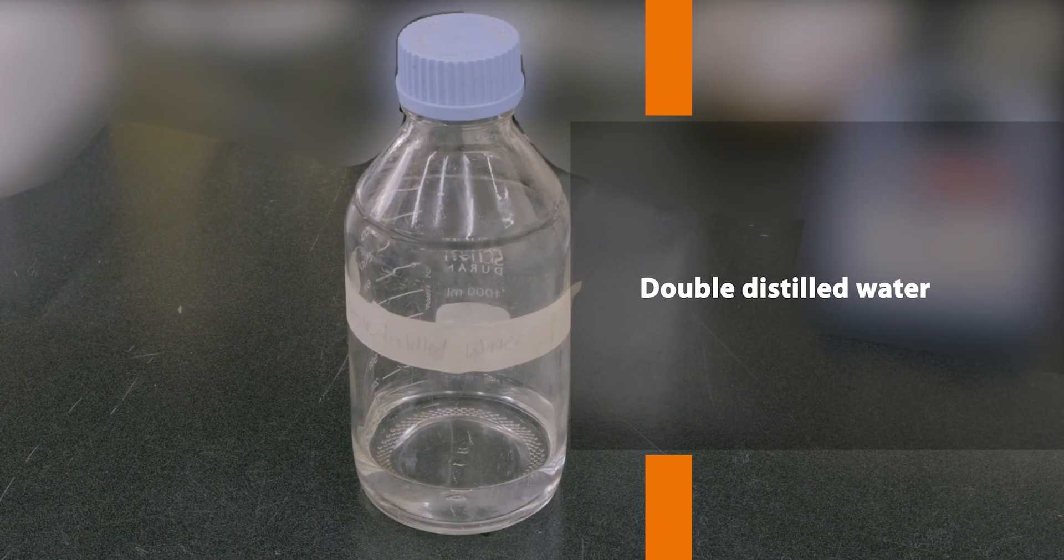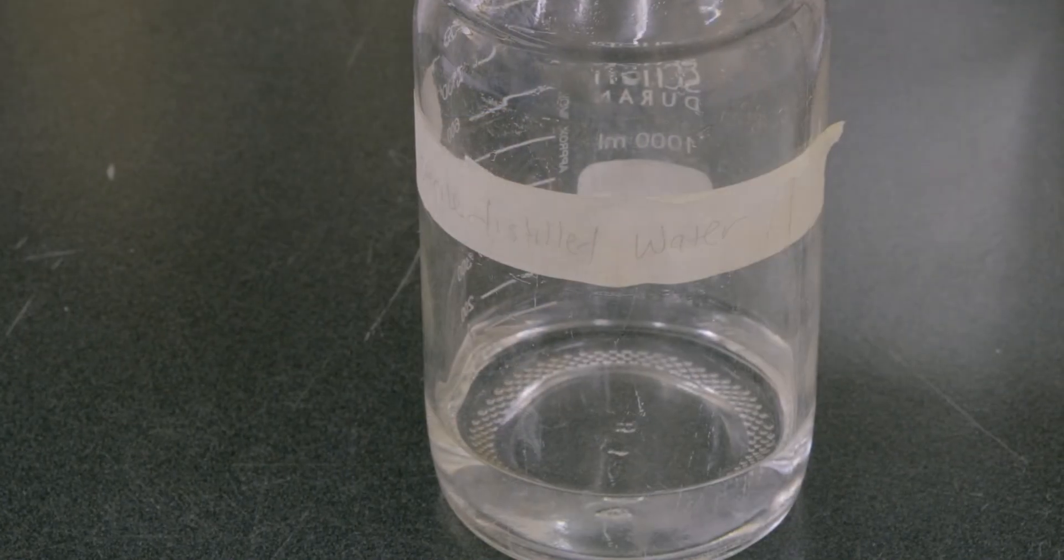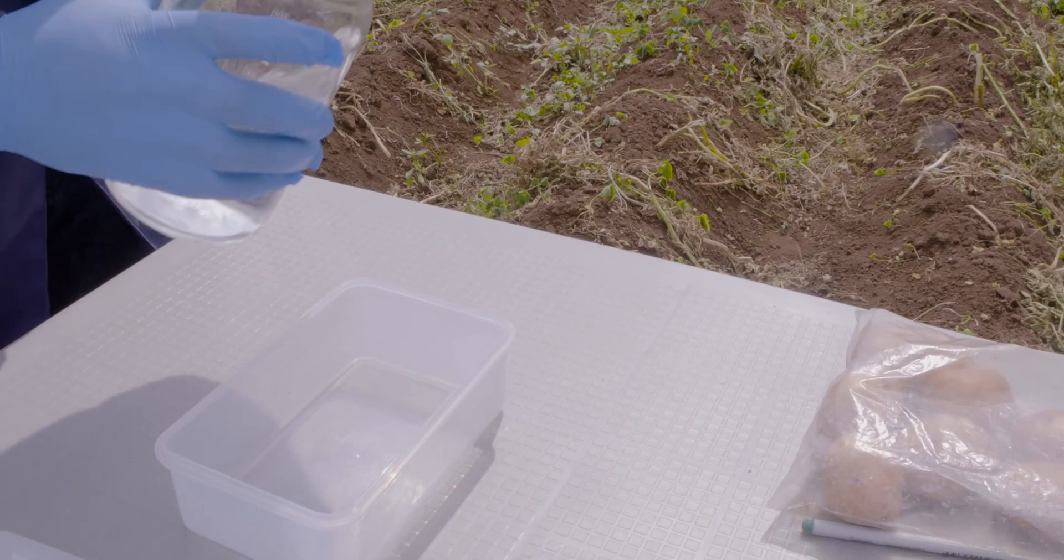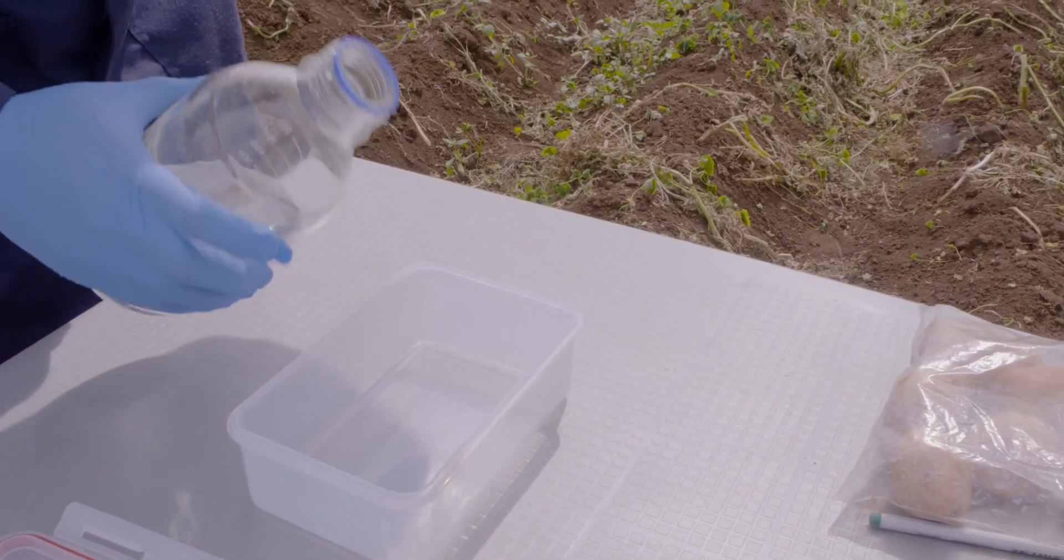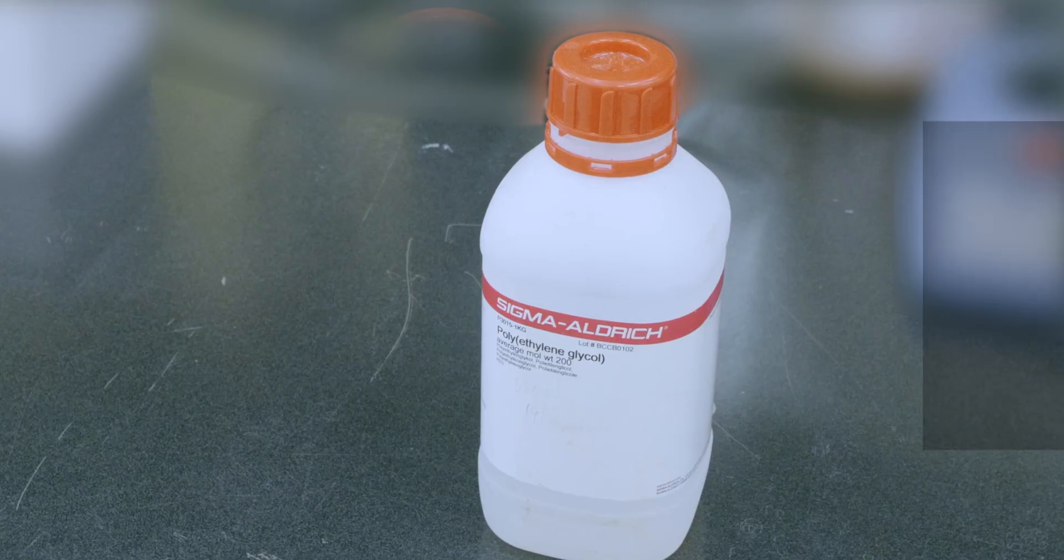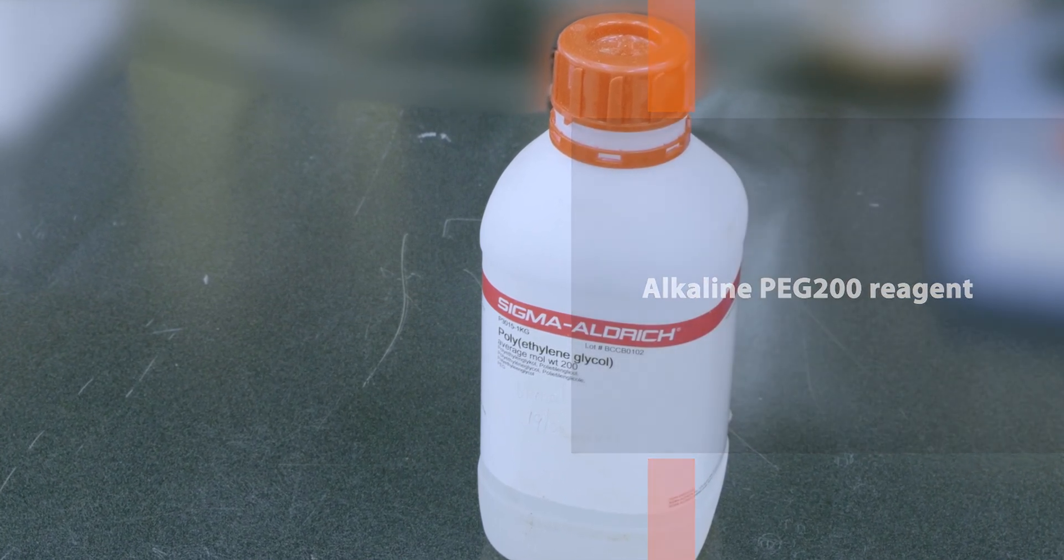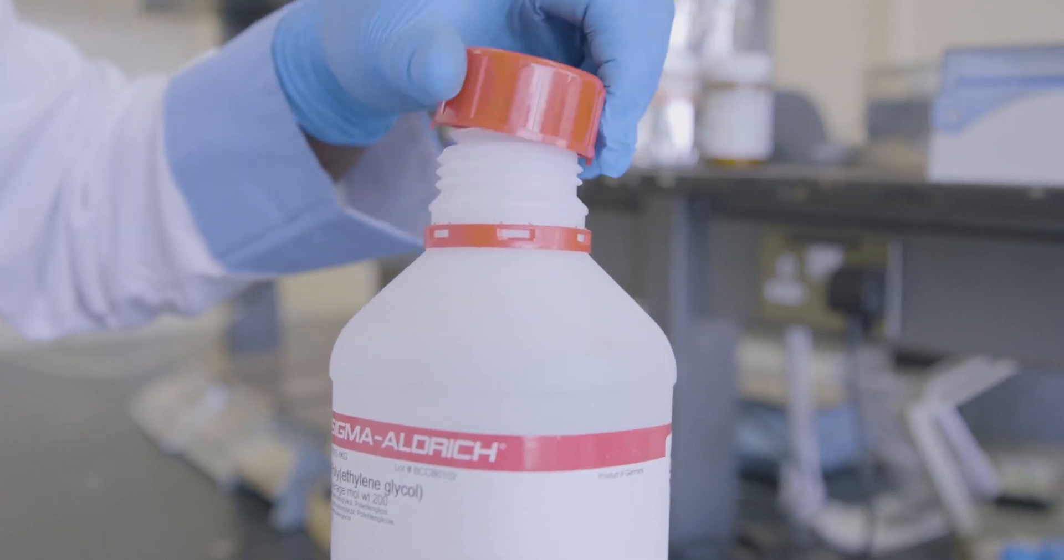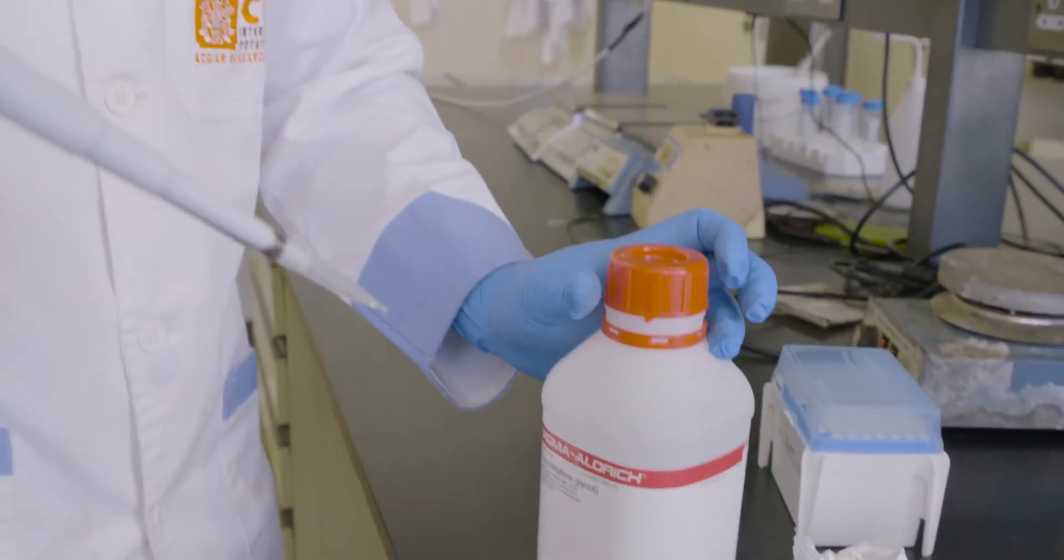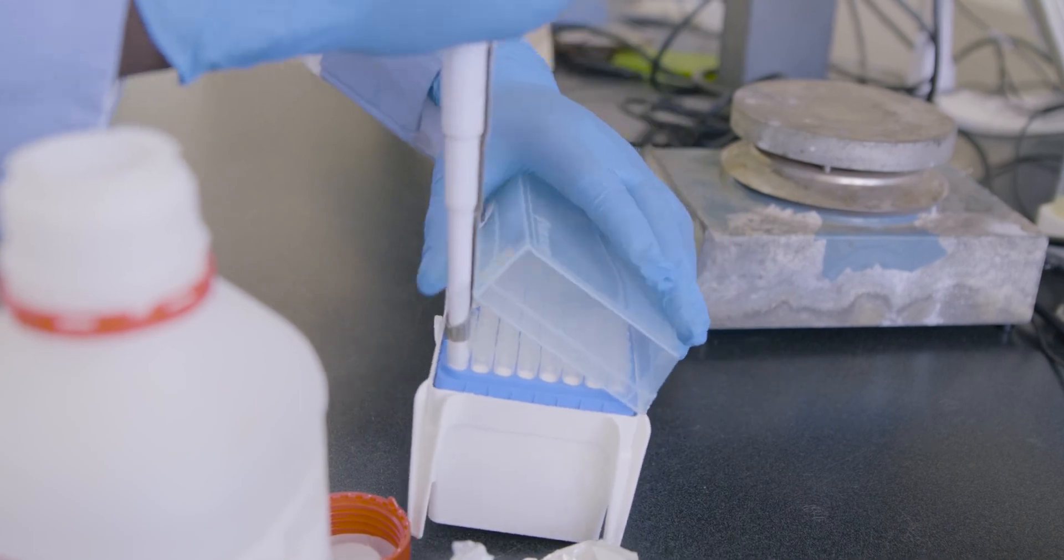Double distilled or type 2 autoclaved water to mix primers. For type 2 water, distilled water is passed through a filter before autoclaving it. This eliminates salts, ions, nucleic acids and enzymes which might interfere with results. Alkaline PEG200 reagent to use as lysing agent for sample maceration. PEG200 captures inhibitors present in the extraction. The alkaline pH denatures nucleases in the extraction which could degrade target nucleic acid in the detection.